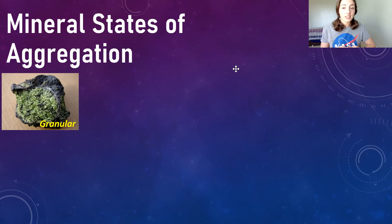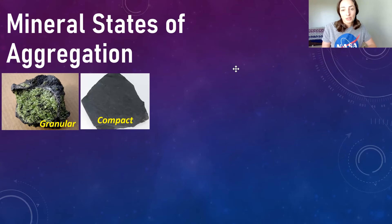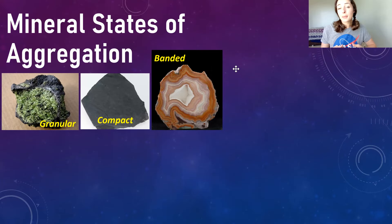An example of granular aggregation is olivine. Next we have compact, which defines the specimen as so fine-grained that the state of aggregation is not obvious — examples are seen in clay minerals. Additionally, we have banded states of aggregation such as shown in this agate, where banding occurs due to slightly different composition.